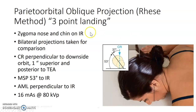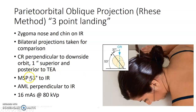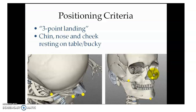The three-point landing: zygoma, nose, and chin are down on the IR. You're going to do bilateral projections for comparison, so you'll do one of each orbit. The central ray is perpendicular to the downside orbit, one inch superior and posterior to the TEA — that's the top of ear attachment. The MSP forms a 53-degree angle to the IR, and the AML is perpendicular to the IR.